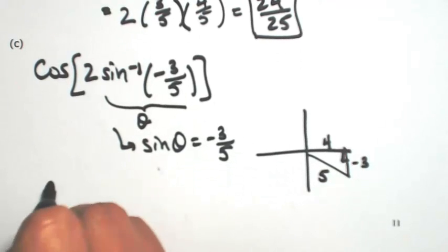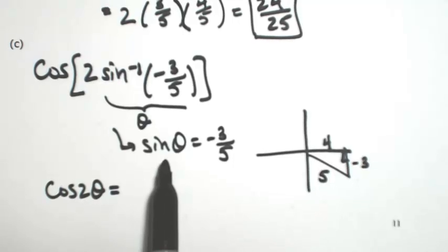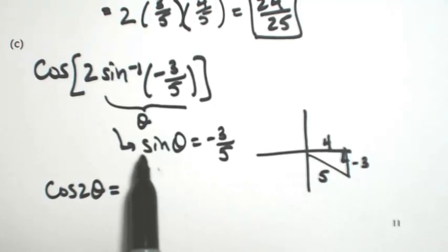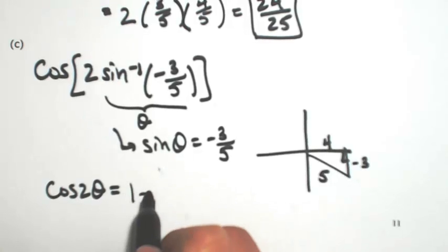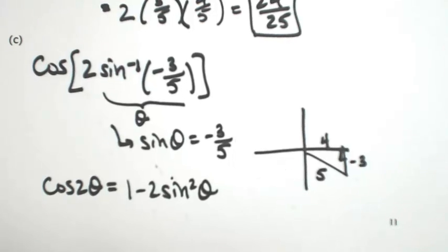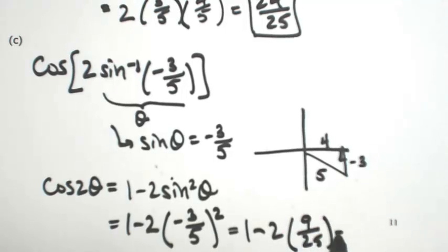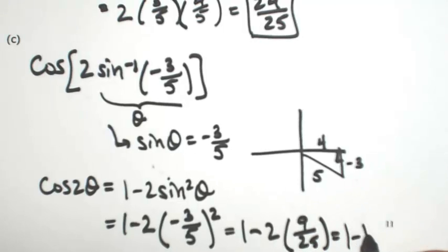So then I'm looking for the cosine of 2 theta. You have three equations that could be used. Because I know the sine, I'm going to use the one that involves just sine: 1 minus 2 sine squared theta. If you really think about it, none of the triangle work was necessary, because we only needed the sine value anyway. So this is 1 minus 2 times negative 3 fifths squared, which gives 1 minus 2 times 9 over 25, so 1 minus 18 over 25, which equals 7 over 25.